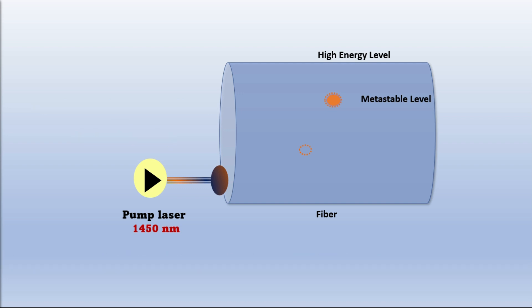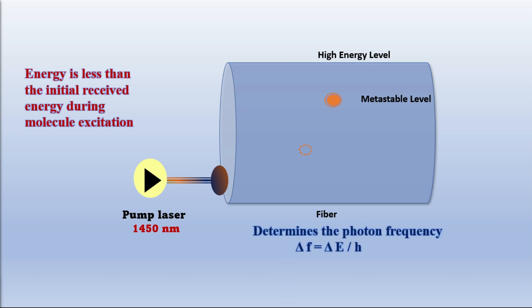Since the molecules decay to an intermediate energy vibration level, the change in energy is less than the initial received energy during molecule excitation. This change in energy from excited level to intermediate level determines the photon frequency. This is referred to as the Stokes frequency shift and determines the Raman gain versus frequency curve shape and location.